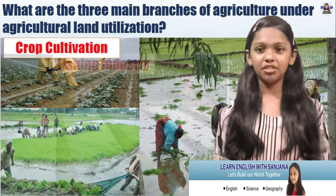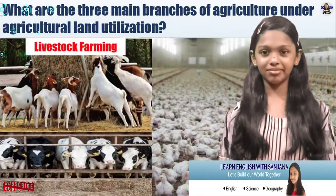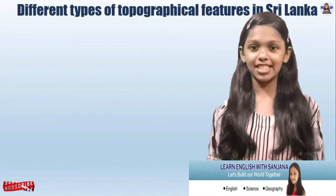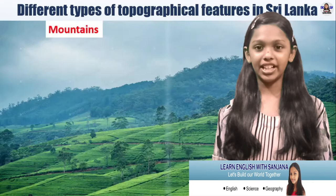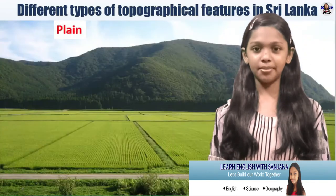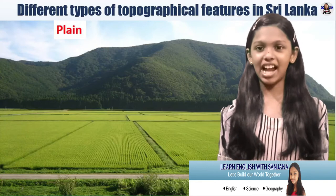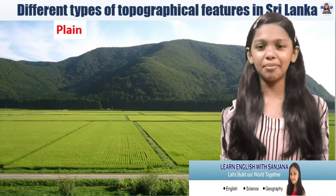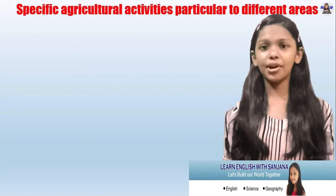There are three main branches of agriculture and agricultural land utilization. They are crop cultivation, the fishing industry, and livestock farming. We can see different types of topographical features in the environment — mountains, valleys, highlands, and plains. Some specific agricultural activities totally depend on topographical and climatic features.